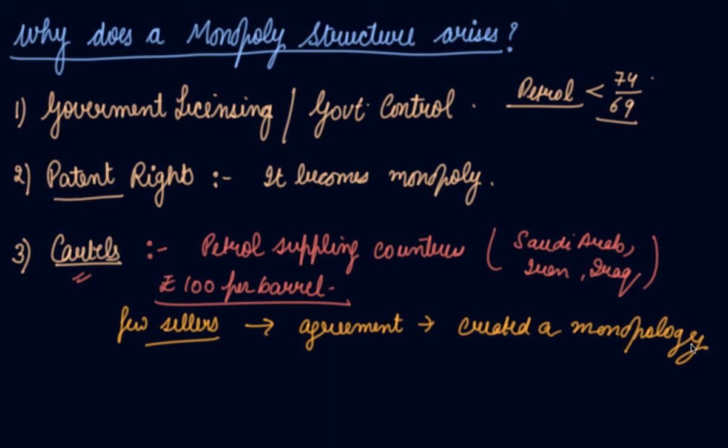The fourth one we have is natural occurrence. Natural occurrence of a particular product - say you're living in an area and you find that there is iron ore or mineral ore in that particular area.